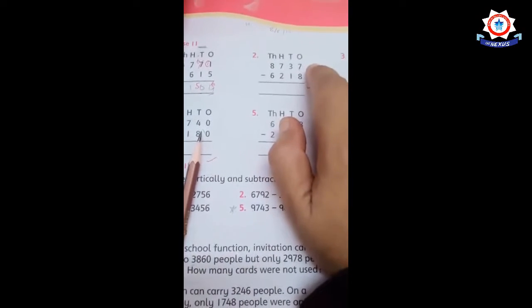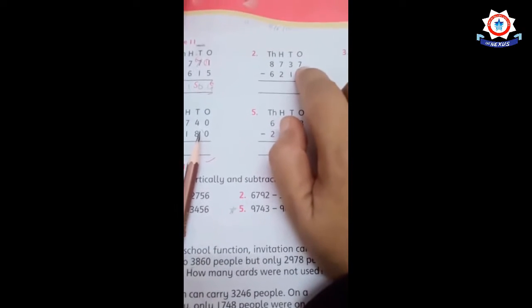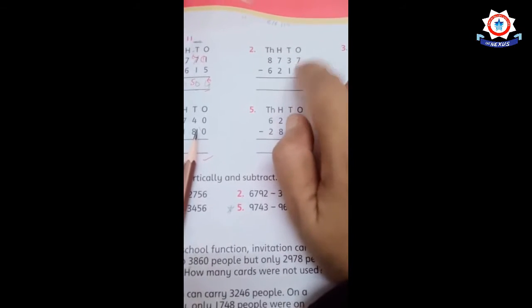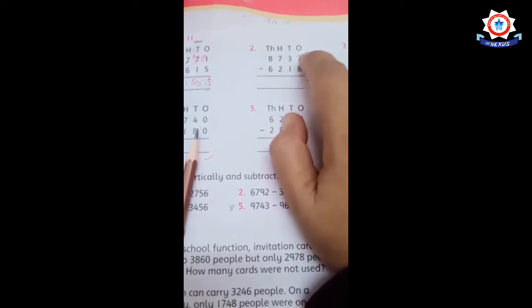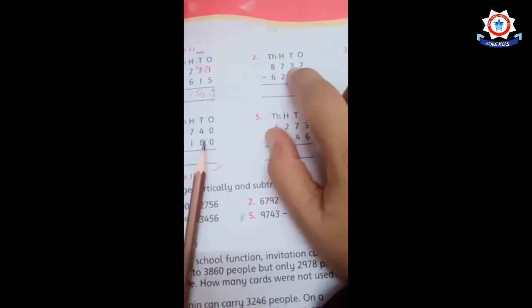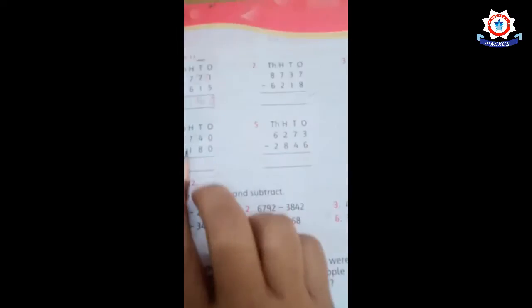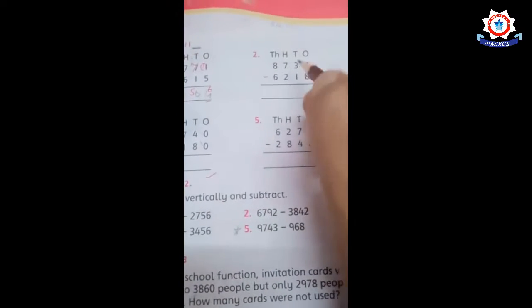This exercise is about borrowing. Because the number is smaller, we have to borrow from the next column. When we borrow, seven becomes seventeen. Now,